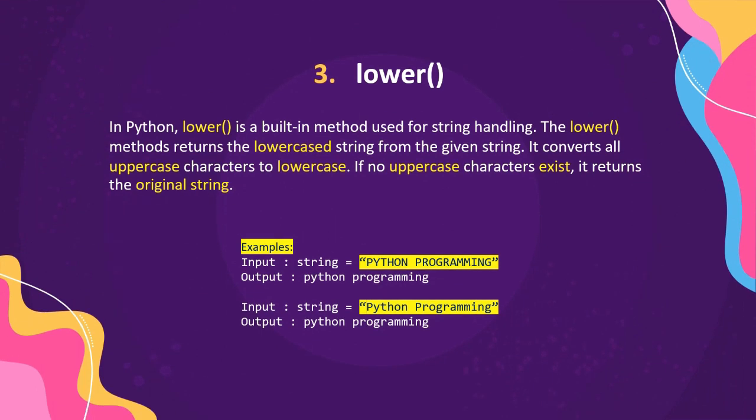The third method is lower. In Python, lower is a built-in method used for string handling. The lower method returns the lowercase string from the given string — it converts all uppercase characters to lowercase. If no uppercase character exists, it returns the original string. For example, with input string 'PYTHON PROGRAMMING' in all uppercase, lower will convert all characters to lowercase.